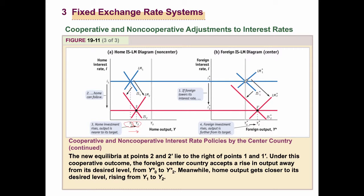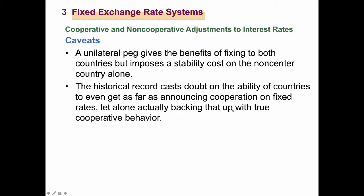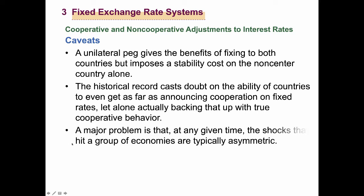For the foreign country, because they chose to cooperate with the non-center home country, their income increased as well, so the economy is likely to be slightly overheating. It requires some sacrifice from the central country to improve the home country's situation, because they must keep their interest rates equal. This kind of peg is called a unilateral peg — one-sided exchange rate fixing. The unilateral peg gives the benefits of fixing to both countries, promoting trade and providing extra stability.